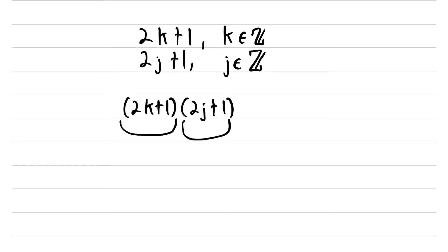So let's multiply these two odd numbers using the distributive property. That gives us 4 times kj plus 2k plus 2j, and then plus 1.